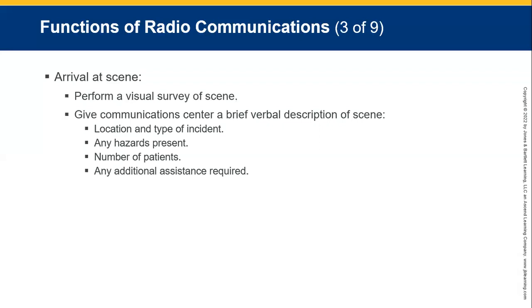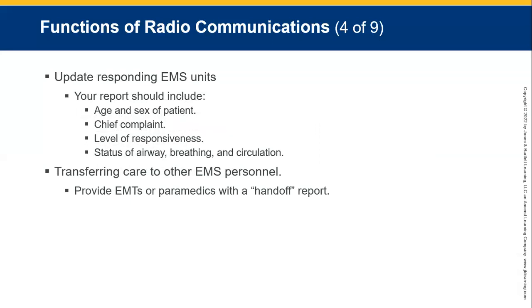Once we arrive on scene, we need to give the communications center, mobile center, or base information: tell them where we are, what we found, any types of hazards present, number of patients, and additional resources needed — maybe an extra ambulance or the fire department. Hazards are definitely an important thing to relay. Update the EMS units with things like the age and sex of the patient, chief complaint, levels of responsiveness, vital signs, and status of airway, breathing, and circulation.